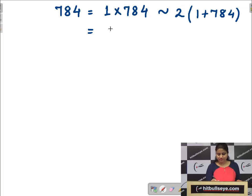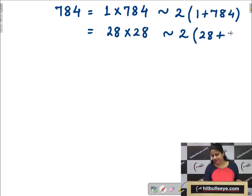If we write down one more rectangle, let it be 28 into 28. What will be the perimeter here? That will be twice of 28 plus 28. So what is the required sum in this case? Sum will be nothing but twice the sum of all the factors.